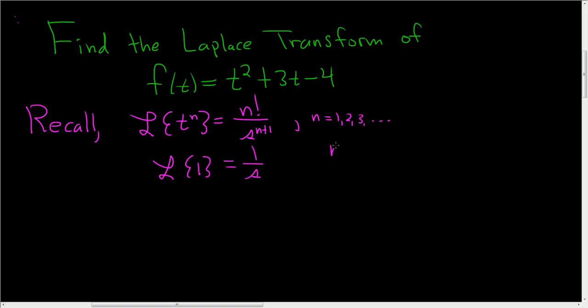You'll notice if you plug in 0 to the first formula, you just get the Laplace transform of t to the 0, which is the Laplace transform of 1. And using n equals 0 in this formula, even though we're not supposed to because it doesn't say you can, you get 0 factorial over s to the 0 plus 1.